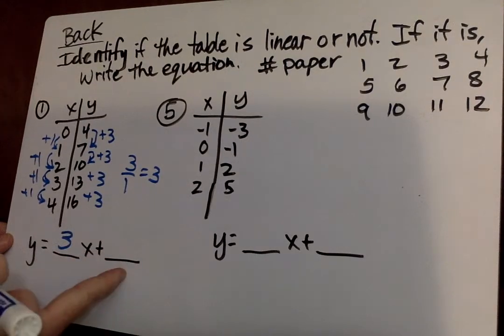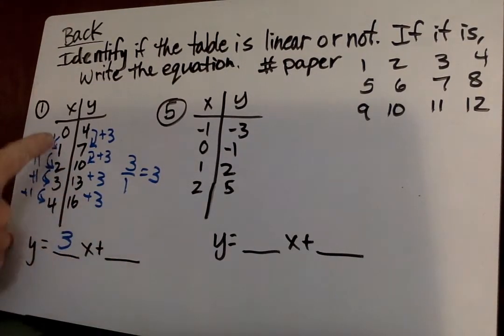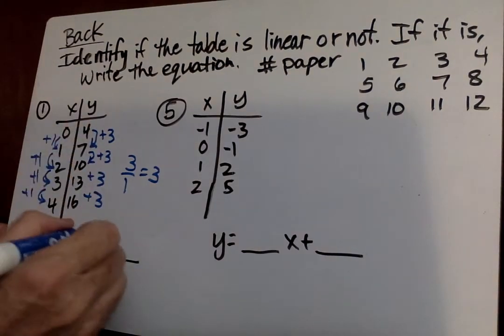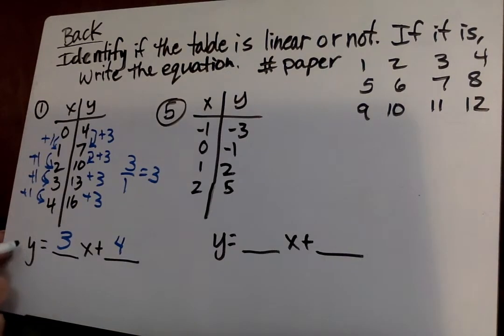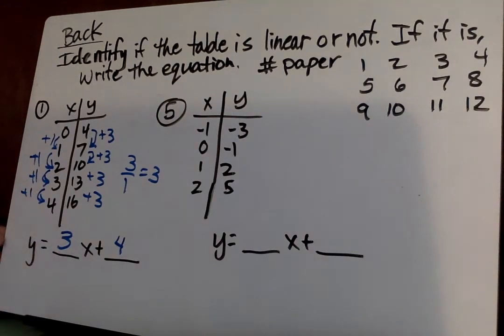Now, to get this one, our B, or y-intercept, or starting value, we say when X is 0, what's Y? 4. So always start out when you're writing linear equations, Y equals blank X plus blank. And you just have to figure out what the two values here are.